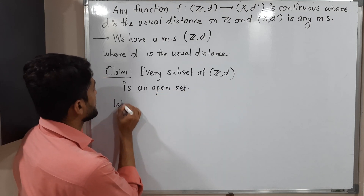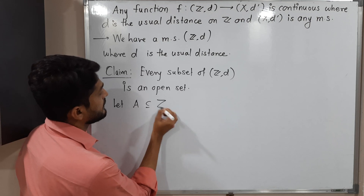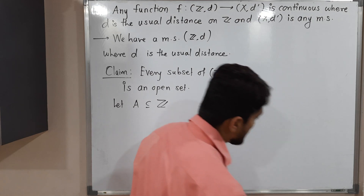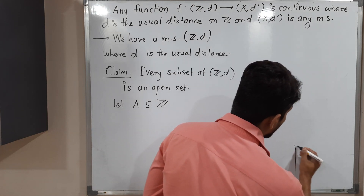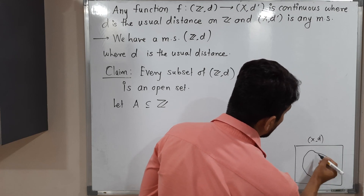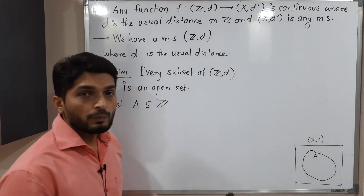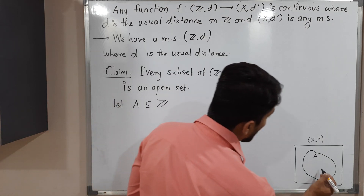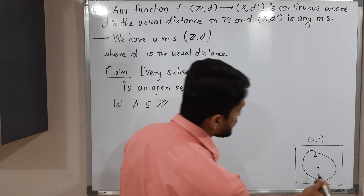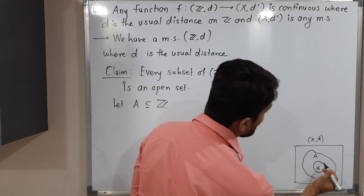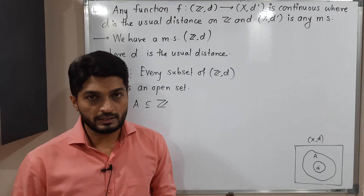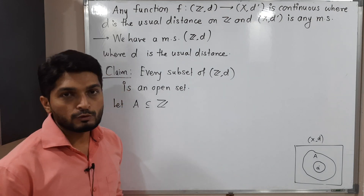Let us take one subset of Z_d. Let A be a subset of Z and we have to prove it is an open set. Let us recall the definition of open set. Suppose we have a metric space X_d and A is any subset of X. We say A is an open set if, for any arbitrary point a belonging to A, it is possible to draw a ball around a which entirely lies inside A. We will use the same method to prove this set A is open.